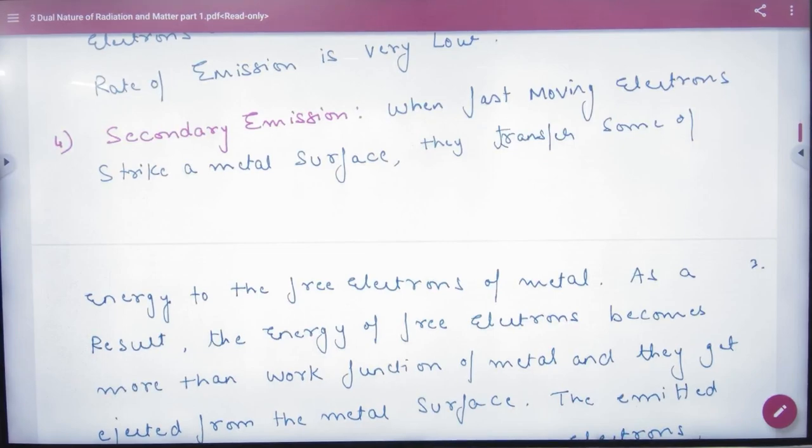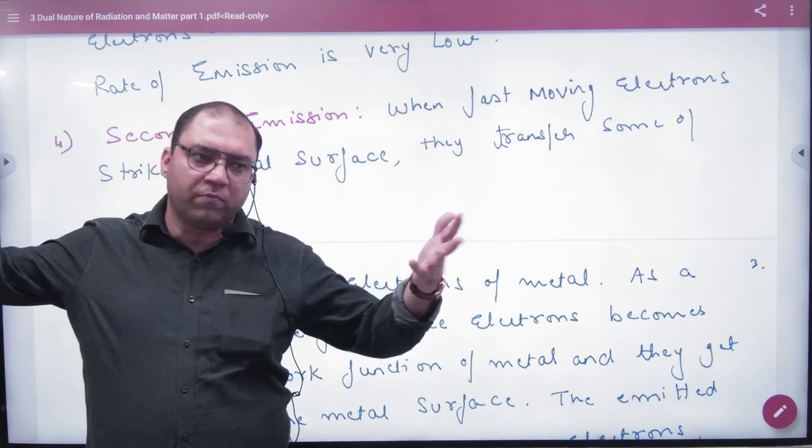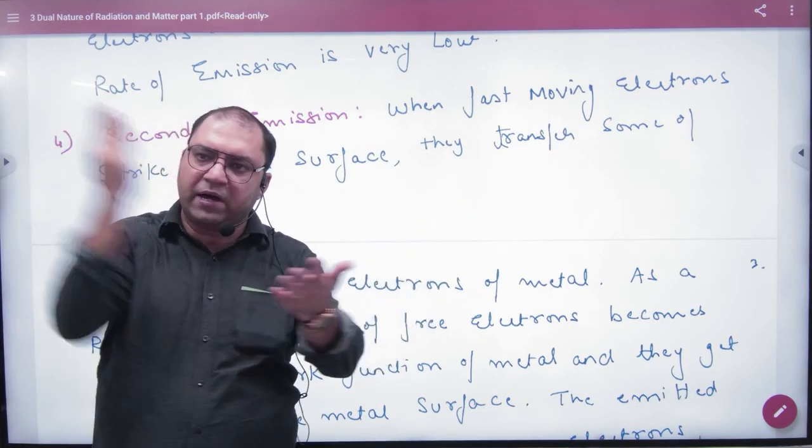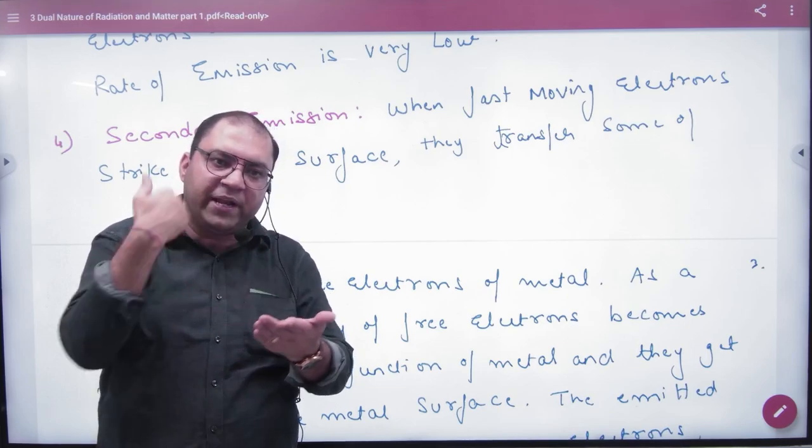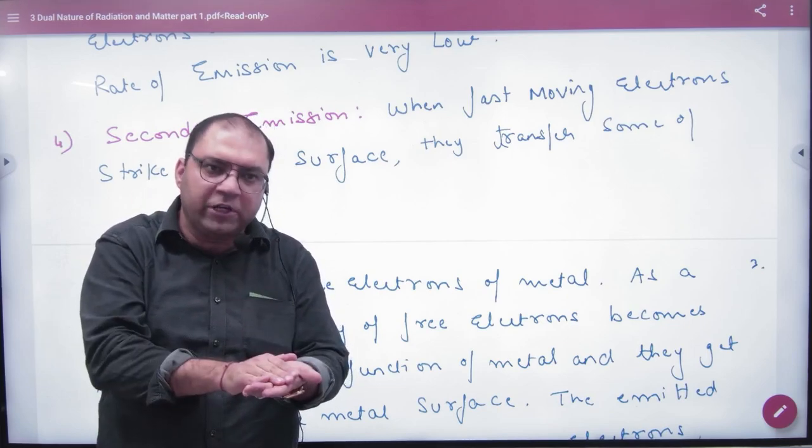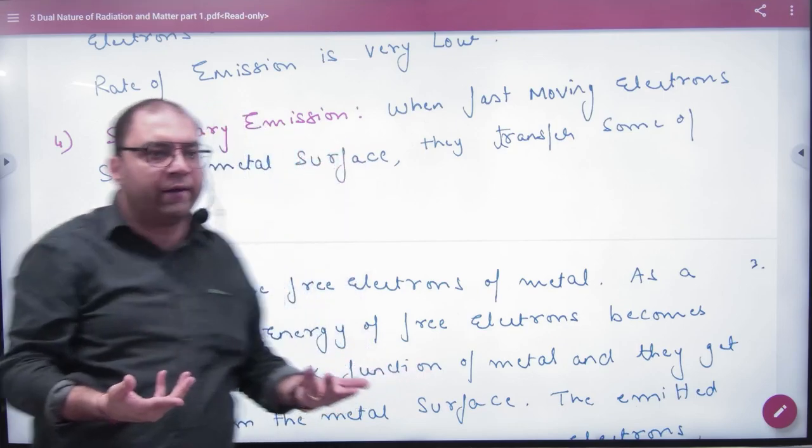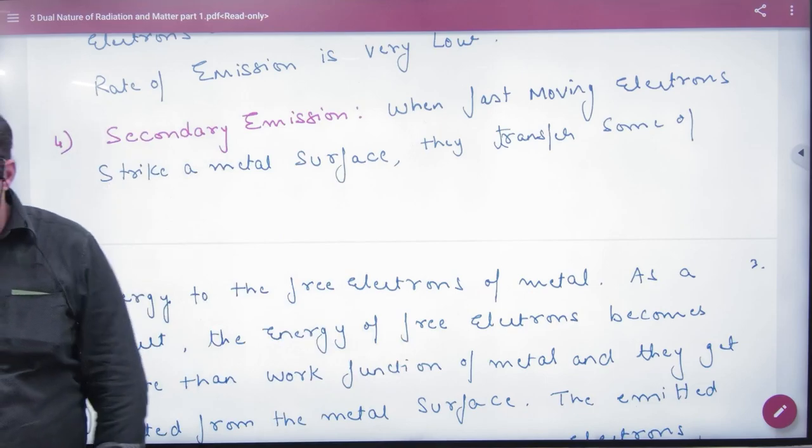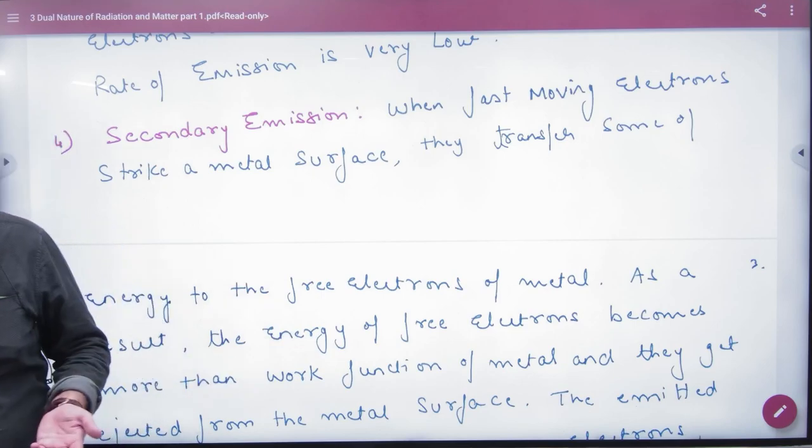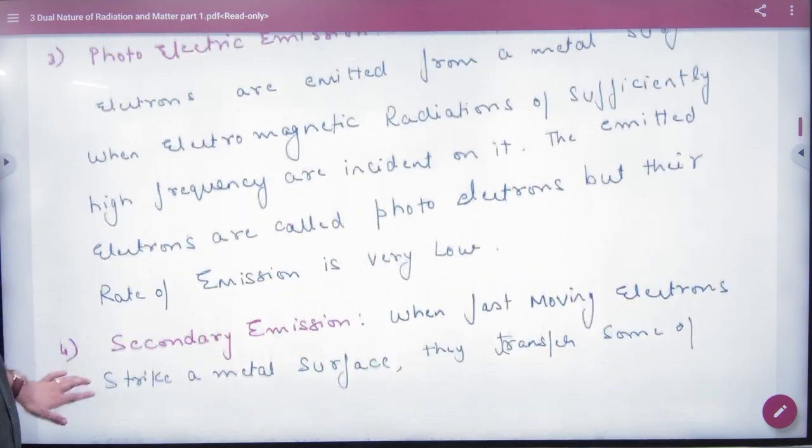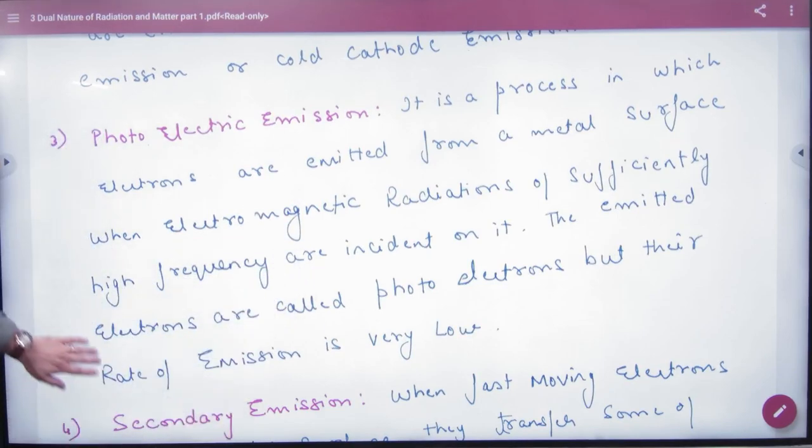Next is secondary emission. In secondary emission, a fast-moving electron comes from outside. It hits the metal, it hits the loosely bound electron with its own energy and it stays itself. But the one who hits it comes out. So we call it secondary emission. We have known that there are a lot of emission types. But in this chapter, we are going to focus only on photoelectric emission. The other processes are not going to follow.